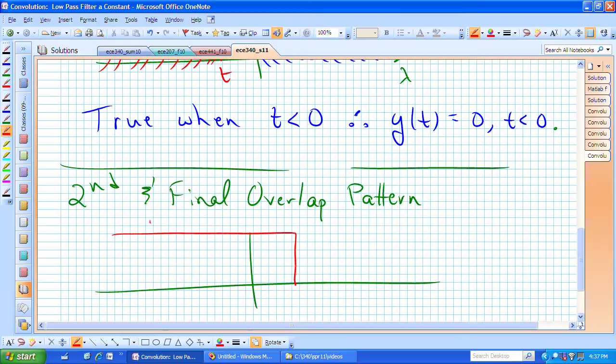Here is our x of t minus lambda, which has an amplitude of 4. Here is our decaying exponential, the impulse response, h of lambda.